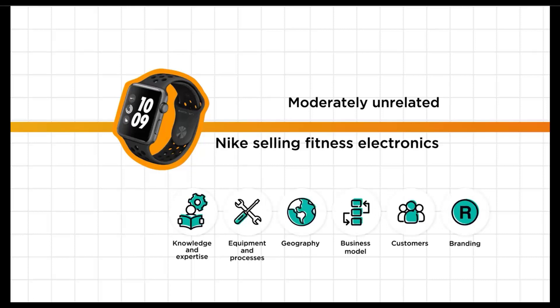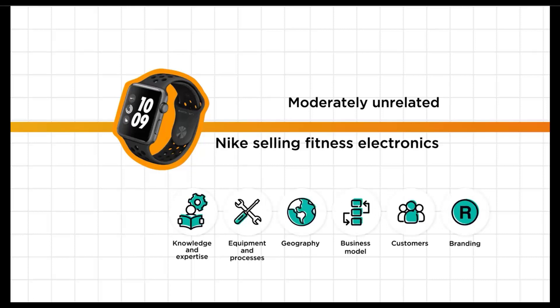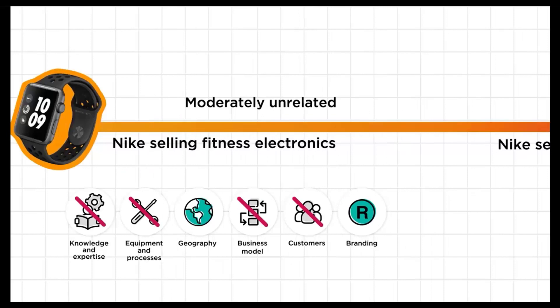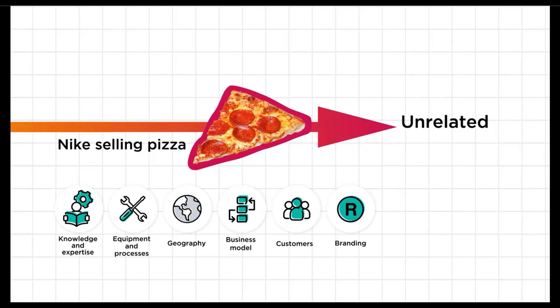Now suppose Nike expands into premium mass market fitness monitors sold through electronic stores with a subscription service. This uses a different knowledge and expertise base, leverages the same brand, but uses different equipment and processes. There's some overlap in the end consumers, but it's a different direct customer — electronic stores versus sports shoes and equipment stores — and it uses a different business model based on a subscription service. Now suppose Nike begins opening an affordable pizza store called Za2Go only in its hometown of Beaverton, Oregon. This utilizes a different knowledge and expertise base, a different brand, different equipment and processes, selling to different customers using a different business model. Okay, I just made this one up to make a point.